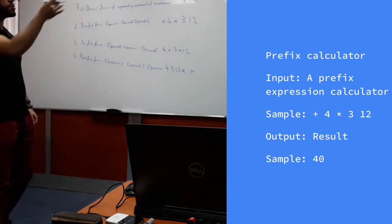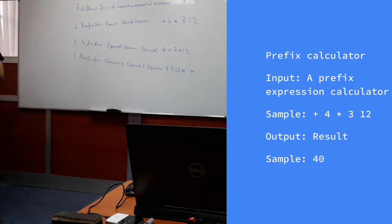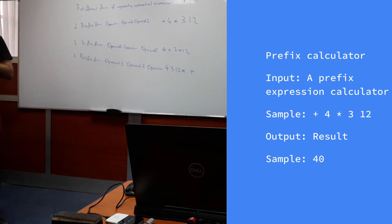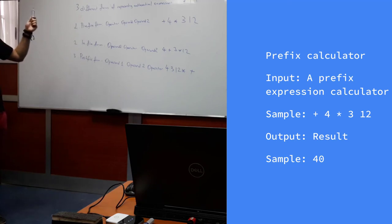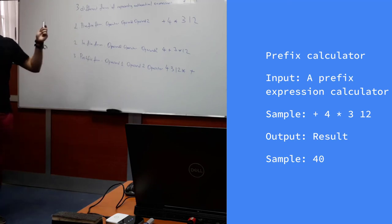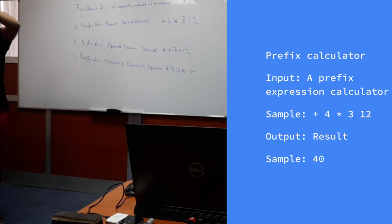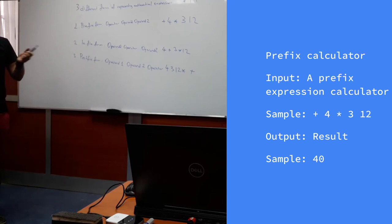Today's programming exercise: we are given an expression in prefix format. We don't know how many elements there are, but everything is on one line and it is exactly one valid expression. Our task is to print out the result. There can be multiple operators and multiple operands — it's not just a single operation — and it can be of any reasonable length.